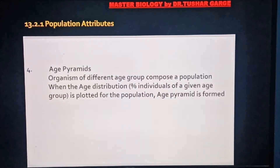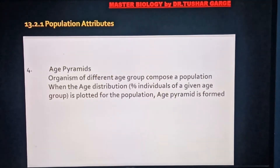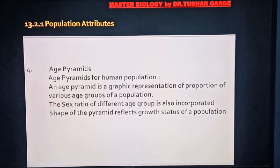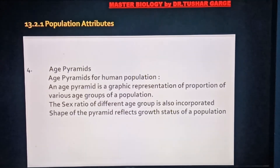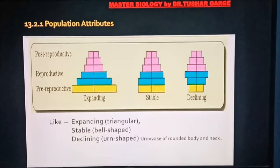अगला है age pyramid। Different age groups के organisms जो एक population को compose करते हैं, यदि उन्हें age के हिसाब से differentiate करके population के साथ plot किया जाए, तो जो pyramid structure मिलता है उसे age pyramid कहते हैं। यह human population के level पर एक graphic representation है proportion of various age groups का। Sex ratio of different age groups भी incorporated होता है। Shape of the pyramid reflects growth status of a population।